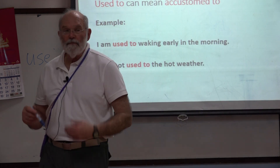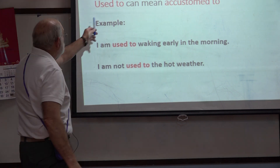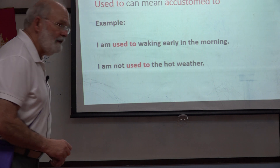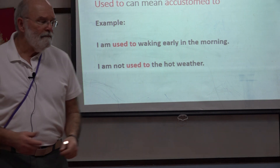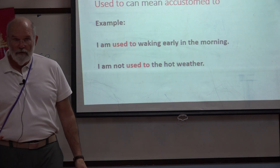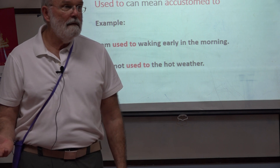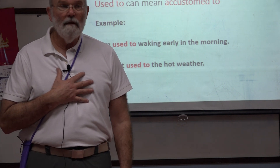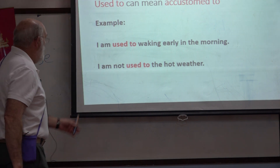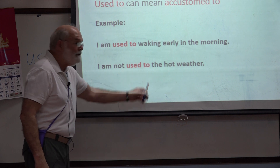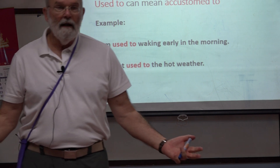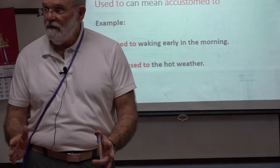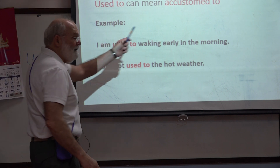Another use for 'used to' — with a D — is that it can mean 'accustomed to'. For example: 'I am used to waking early in the morning' means 'I am accustomed to waking early in the morning' — that's my habit. And: 'I am not used to hot weather. Bangkok is hotter than the climate I am used to.' So 'used to' can mean 'accustomed to'.